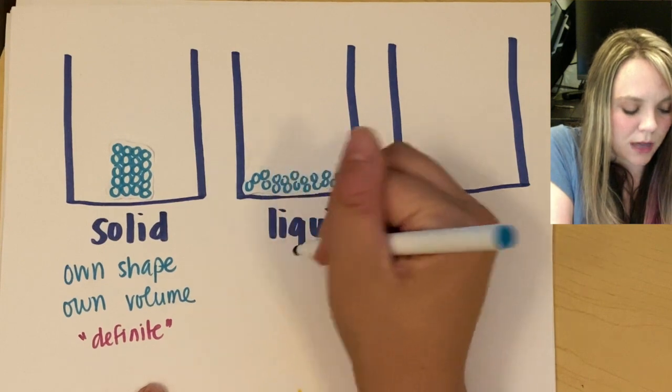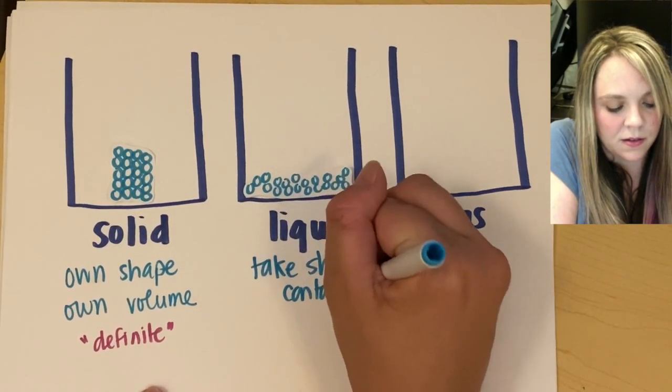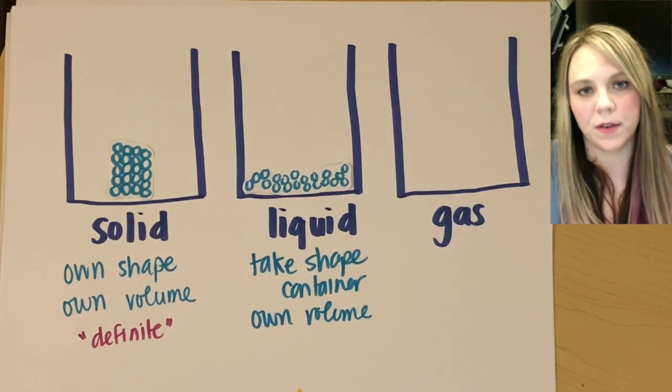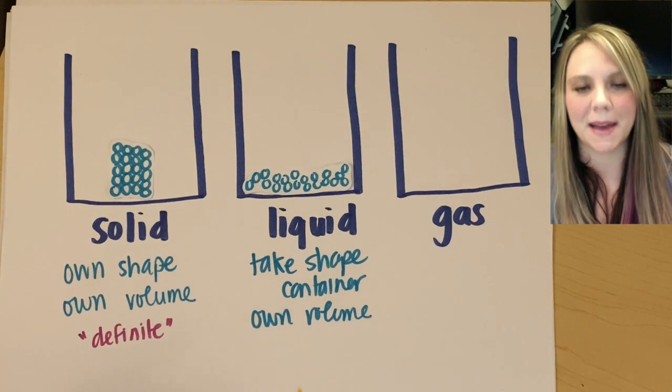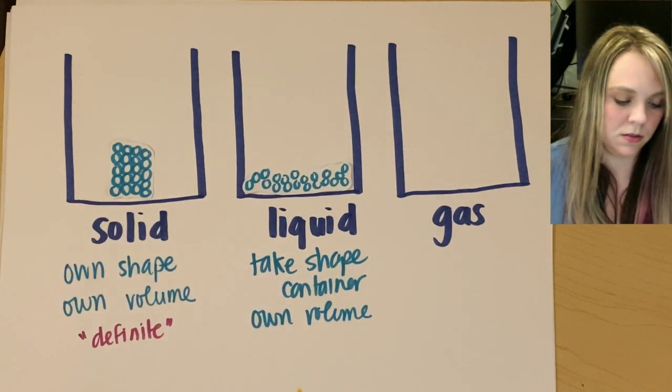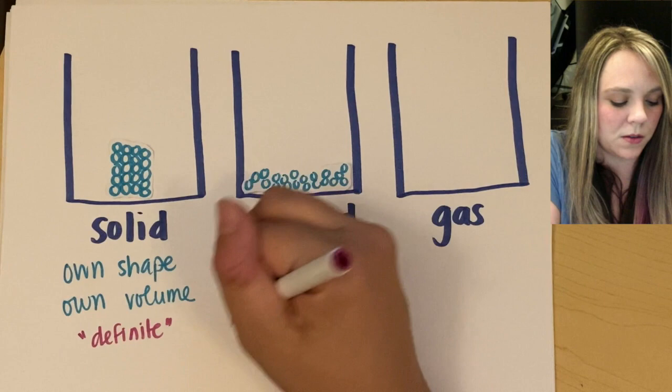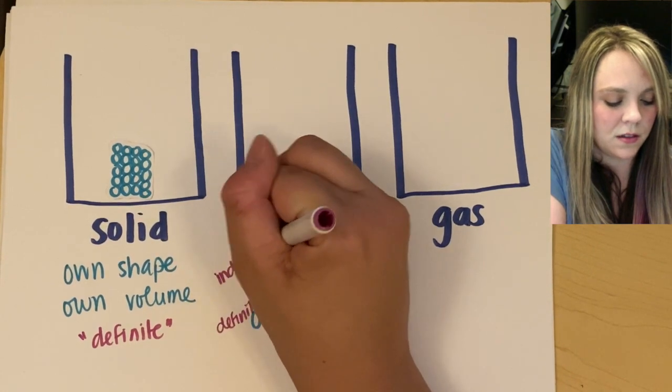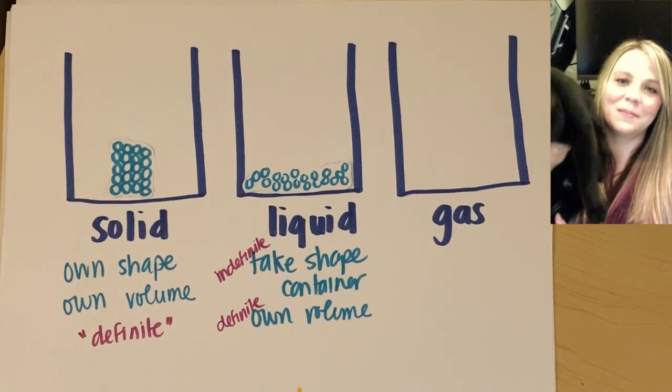Liquids do not have their own shape. So they take the shape of their container, but they do have their own volume. So again, if you have your, you know, 16 ounce water bottle and you're going to pour that into your cup, you're still going to have 16 ounces of water. You don't like magically gain or lose water. The amount of volume in there is still the same. But they do not have their own shape. So this would have another way to write this, right? So if you're looking like in the book, it'll tell you that it has a definite volume and an indefinite shape. All right. And my cat joined us. How exciting. Marvel says hello.